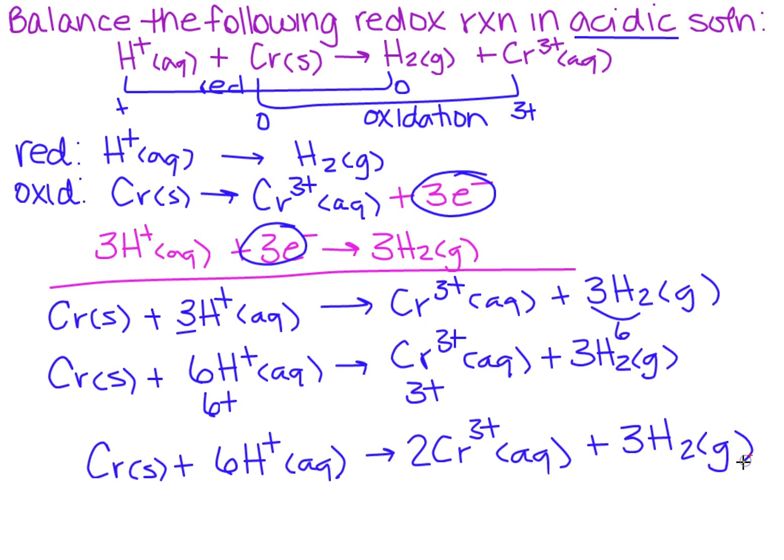Now remember, when you multiply on one side, now there's two chromiums, I know I have to do what to the other side? I have to put a two in front of the chromium. So what do I know about that? This is my final balanced acidic solution reaction.